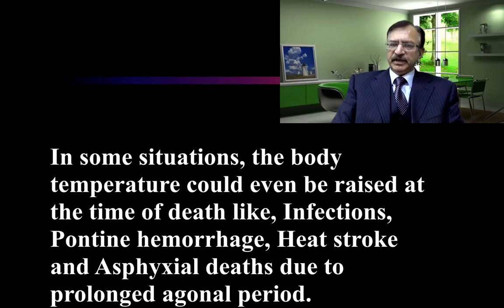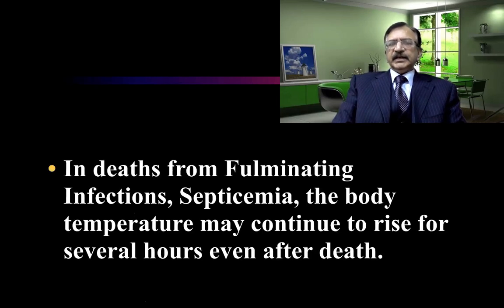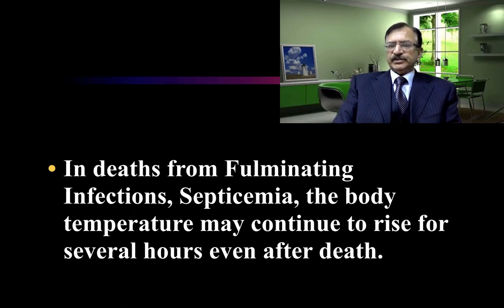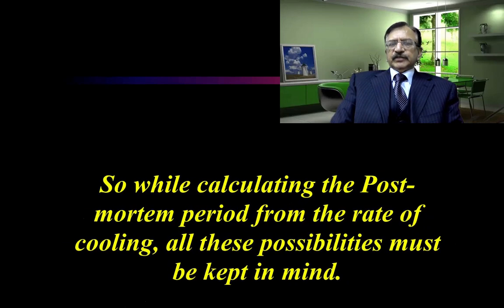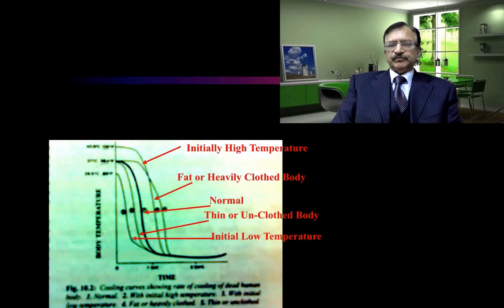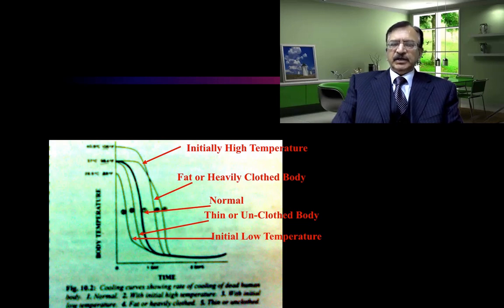In these situations, the body temperature at the time of death is raised above normal. In deaths due to fulminant infections or septicemia, the body temperature may continue to rise even after death for several hours. So, while calculating the post-mortem period from the rate of cooling, all these possibilities should be kept in mind. This graph shows various situations where the temperature can be below normal or higher than normal.